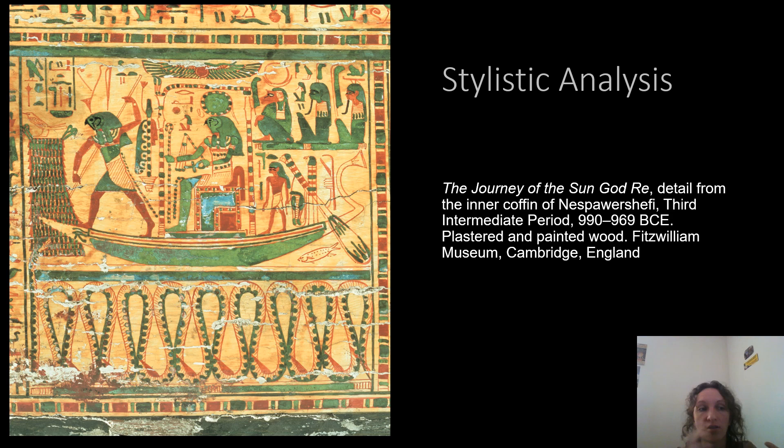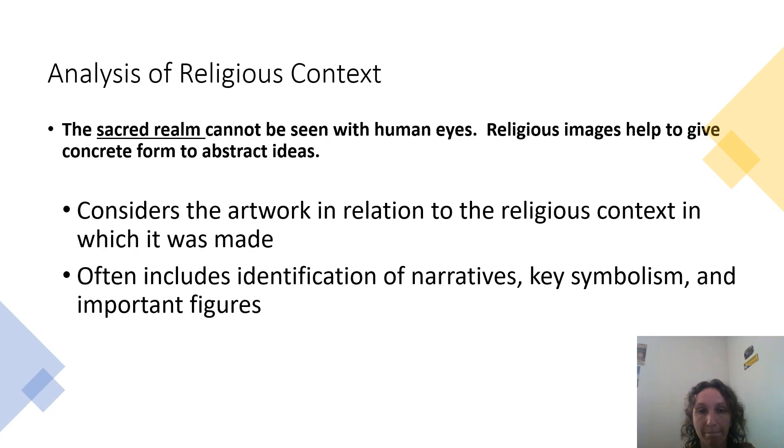Another way to think about stylistic analysis is through that same grouping: ancient Egyptian artwork is very recognizable — you can spot it from across the room. It's recognizable because it has an incredibly distinct style.